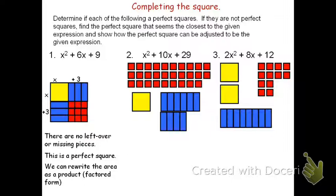I can therefore rewrite the area as a product, which we'll later refer to as factored form, as the quantity (x + 3)². This means the quantity (x + 3) times another quantity (x + 3).